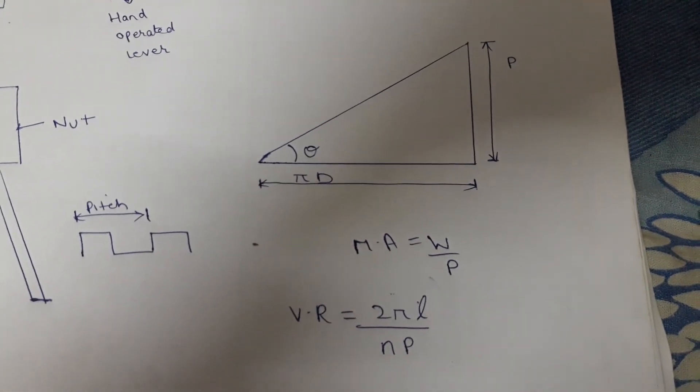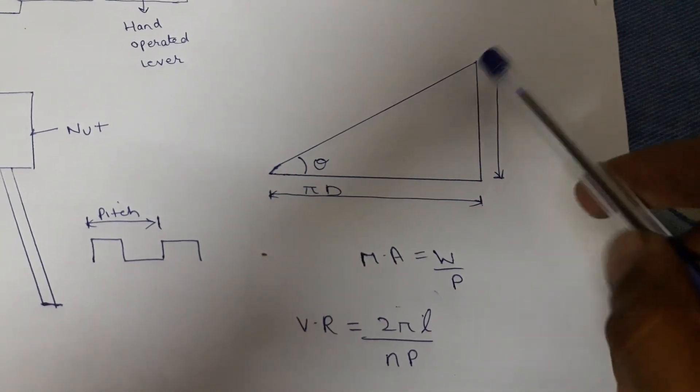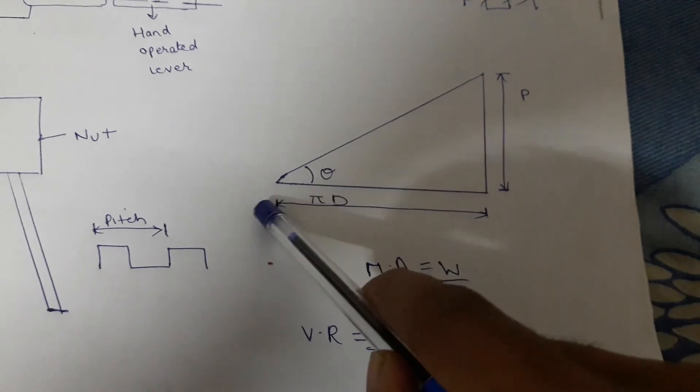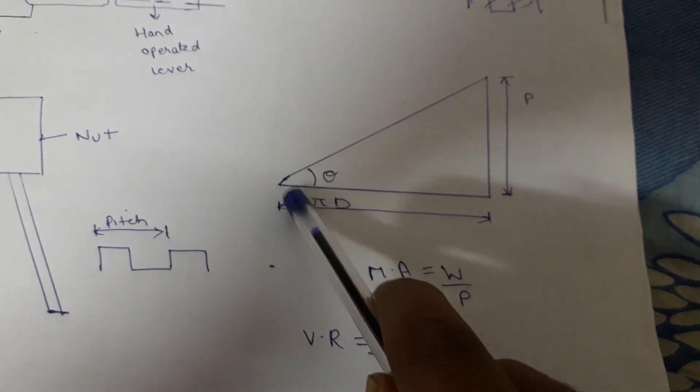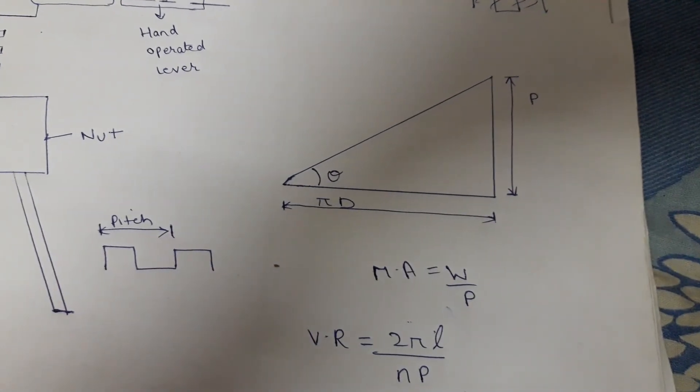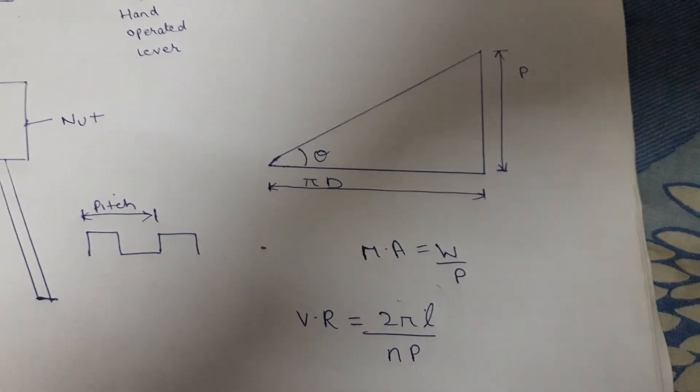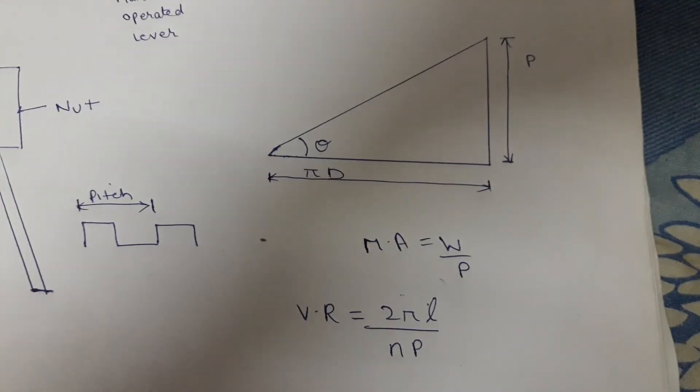So as we all know that simple screw jack works on the principle of inclined plane. This is called helix angle of a thread and this is of pi D. In one complete revolution that how much load is lifted and this is called pitch.